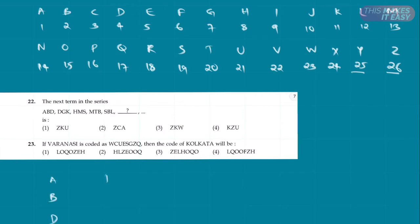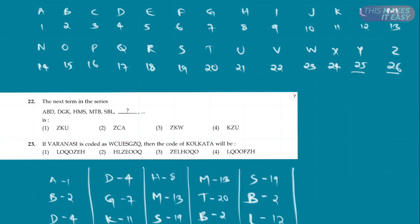It is ABD, DJK, HMS, MTB, SBL. We have written the corresponding numerical value for each. Here we can find a flow. For example, 1 plus 3 is 4, then 4 plus 4 is 8, 8 plus 5 is 13, 13 plus 6 is 19, 19 plus 7 is 26.